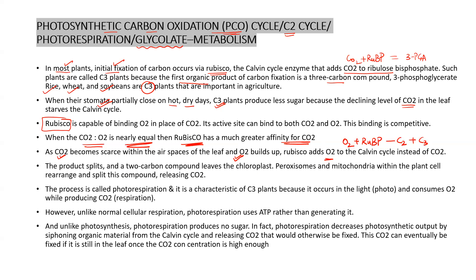To process this, the 2-carbon compound — phosphoglycolate — is passed to another cell organelle, mitochondria, via the peroxysome. So three organelles are used in sequence: chloroplast, peroxysome, and mitochondria. This process starts in the chloroplast and uses oxygen, but in the mitochondria, carbon dioxide is liberated. We call this process photorespiration — it occurs in the presence of light, consumes oxygen, and produces carbon dioxide, like respiration.